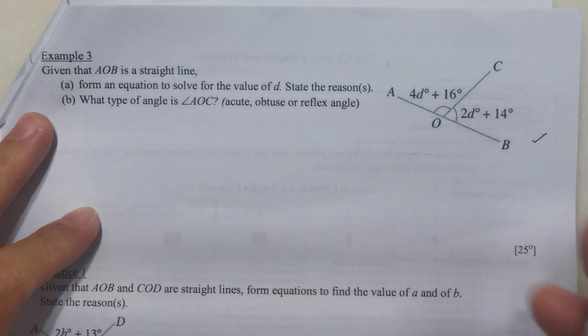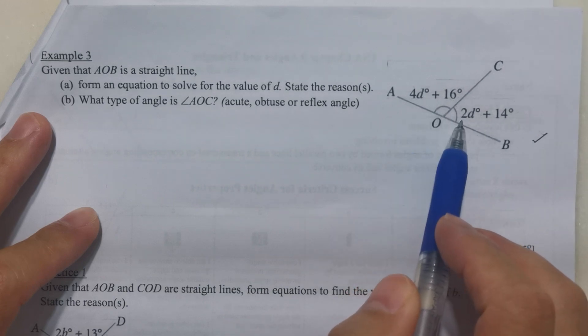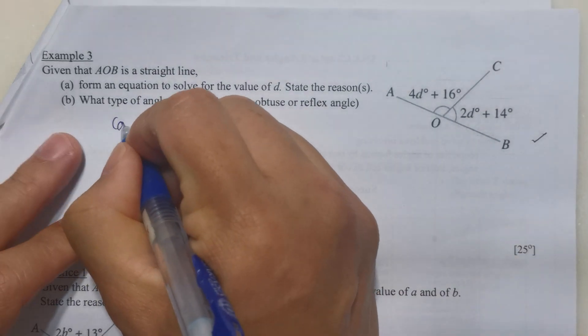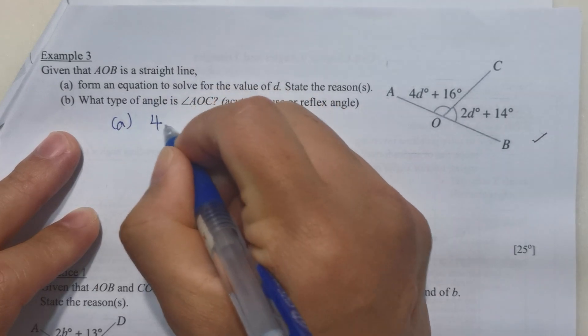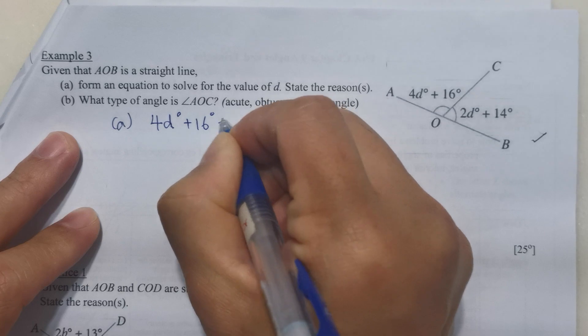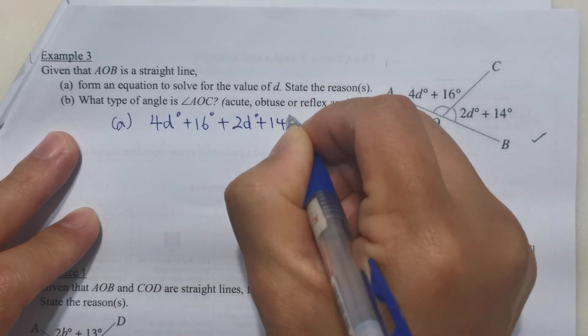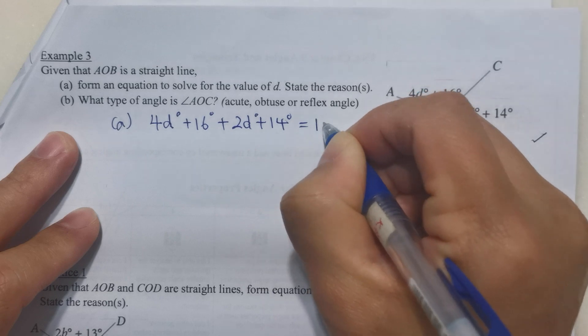The line AOB is a straight line and we're going to form an equation to solve the value of D and state the reason. So we do part A first. Since AOB is a straight line, the two angles add up will give us 180 degrees. So we can write down 4D plus 16 plus 2D plus 14. This will give us 180 degrees.